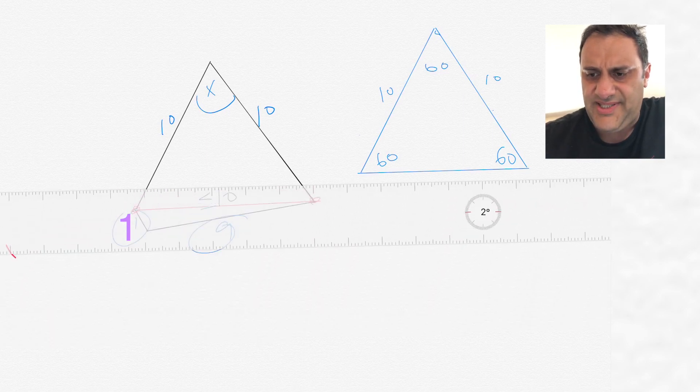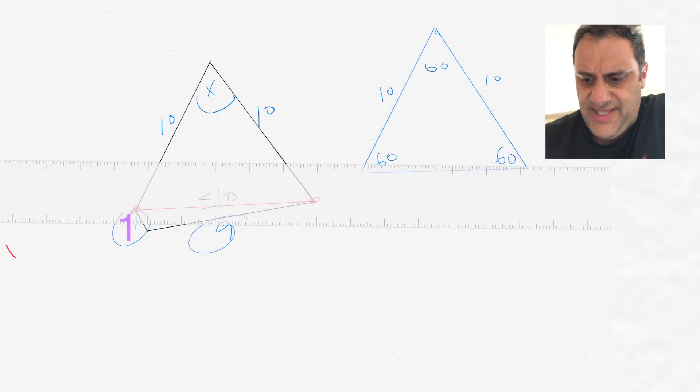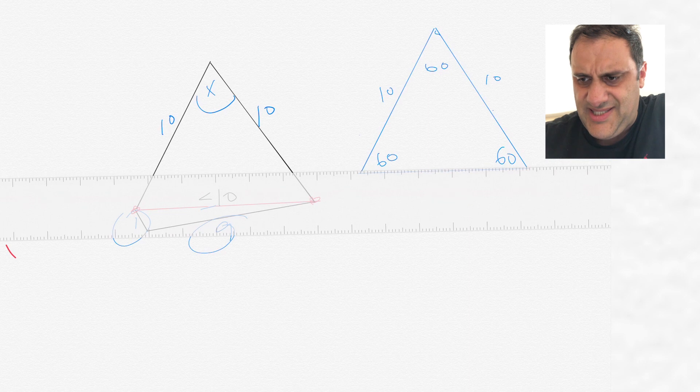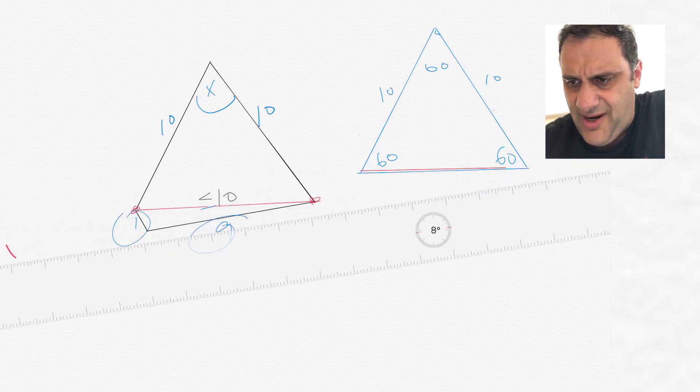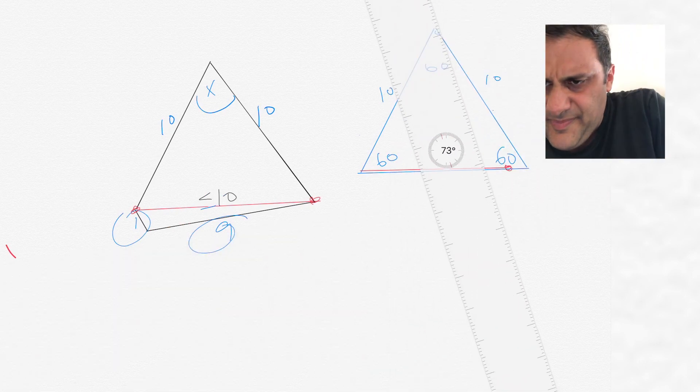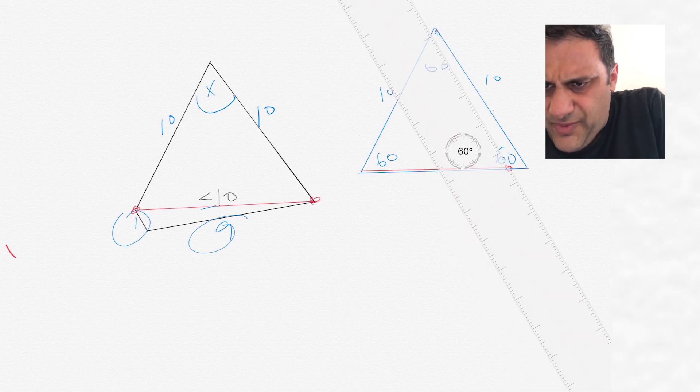Now if you look at that bottom side, if we make it smaller, if that side gets a little smaller whereas the other two stay the same, something smaller than 10 but the other two sides stay the same, what ends up happening is the angle up top gets reduced.